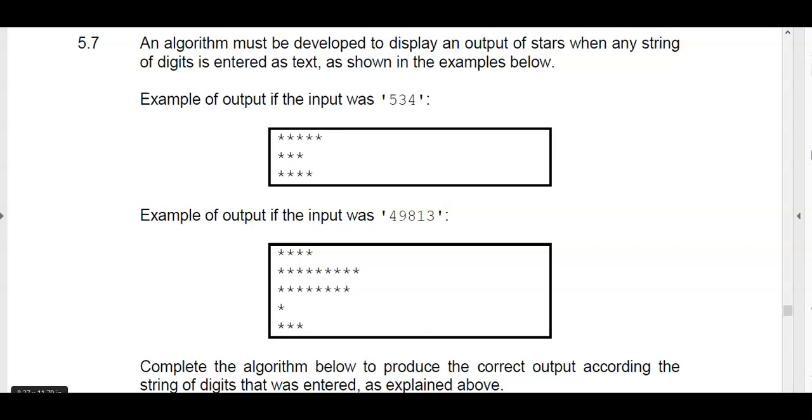The question was that if a value like this was entered, we had to produce these stars. In other words, the 5 there is 5 stars, then the 3 and then the 4. So there's two examples of input and output here. But let me show you the algorithm.